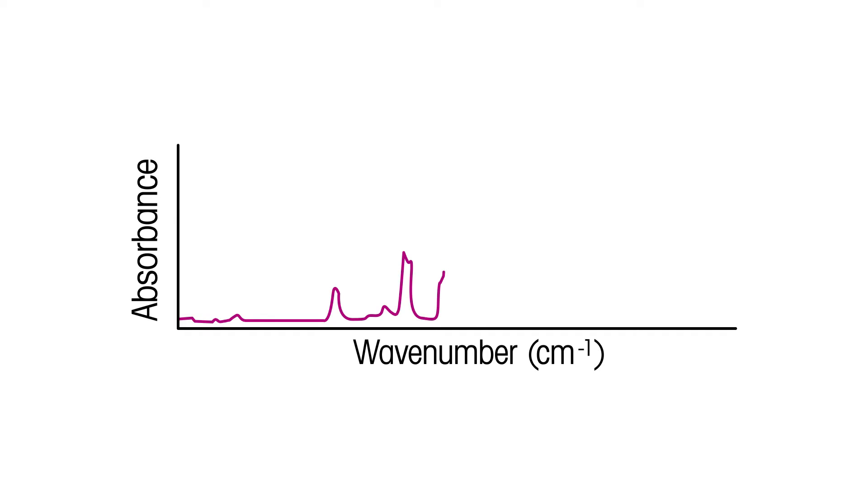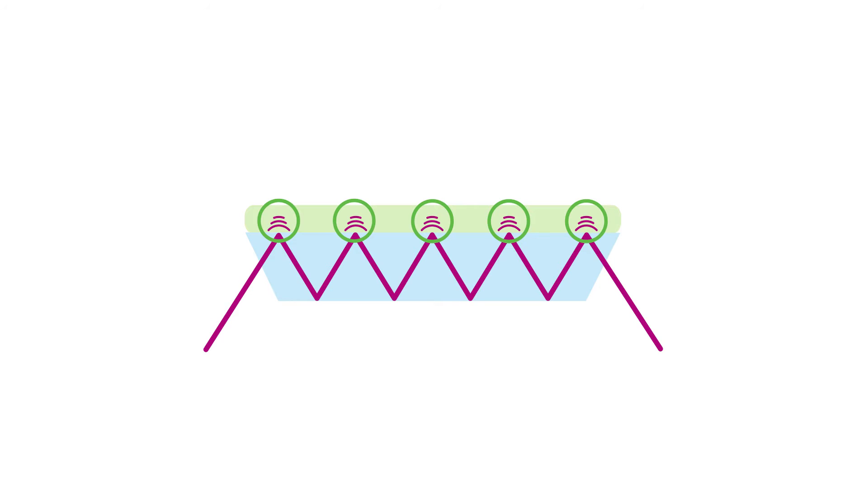As stated earlier, penetration depth is important because it is effectively your path length, and based on Beer's law, the larger the path length, the higher the absorbance is. In an ATR accessory, there are typically multiple bounces where the evanescent wave penetrates into the sample. In these cases, the real path length is the sum of each of these interactions, or bounces.